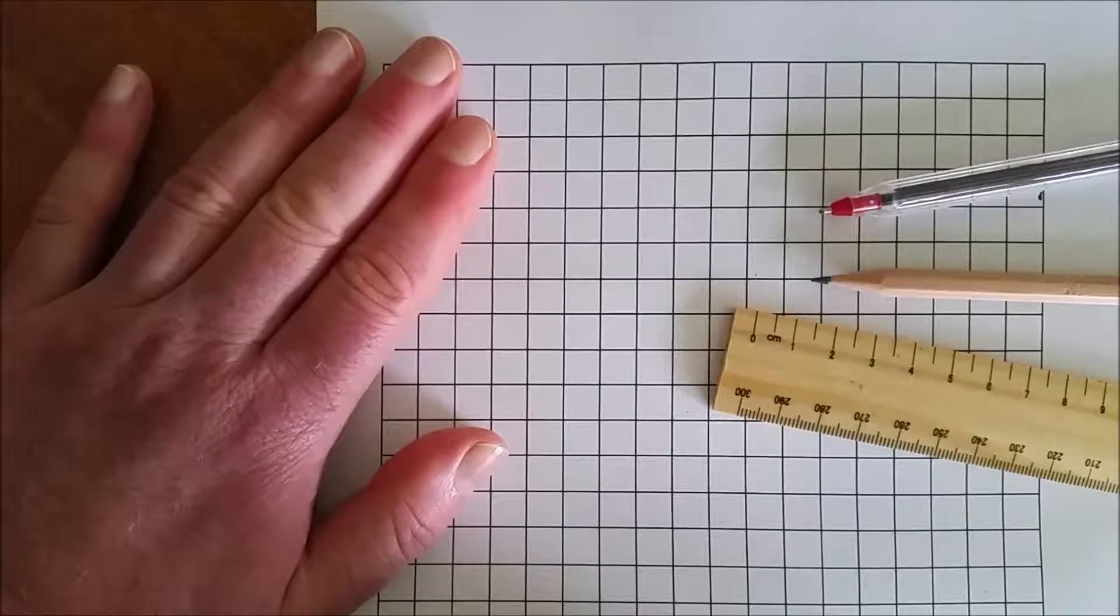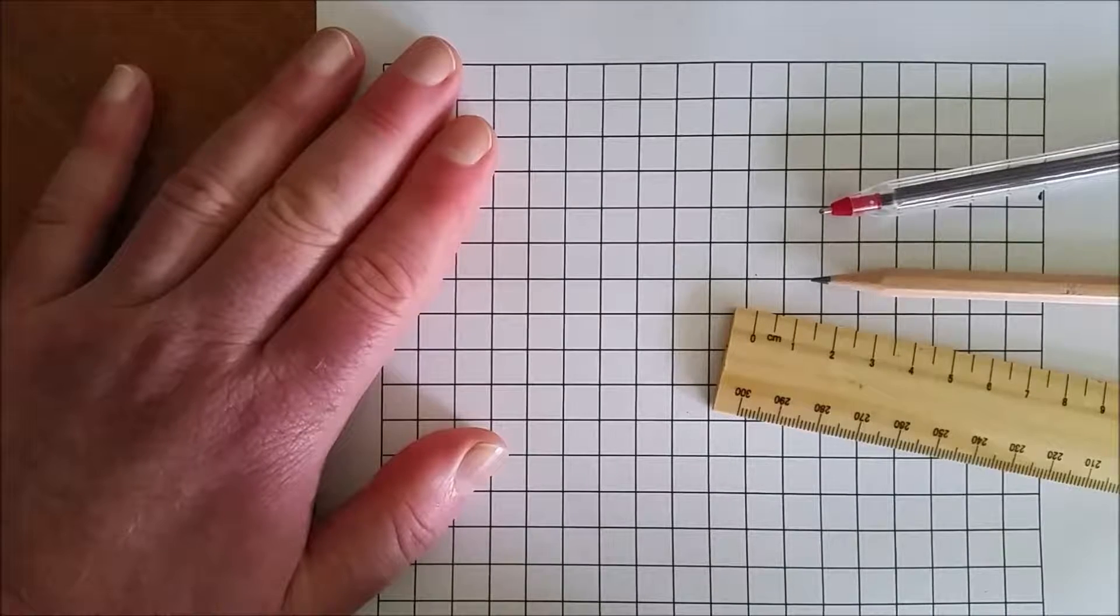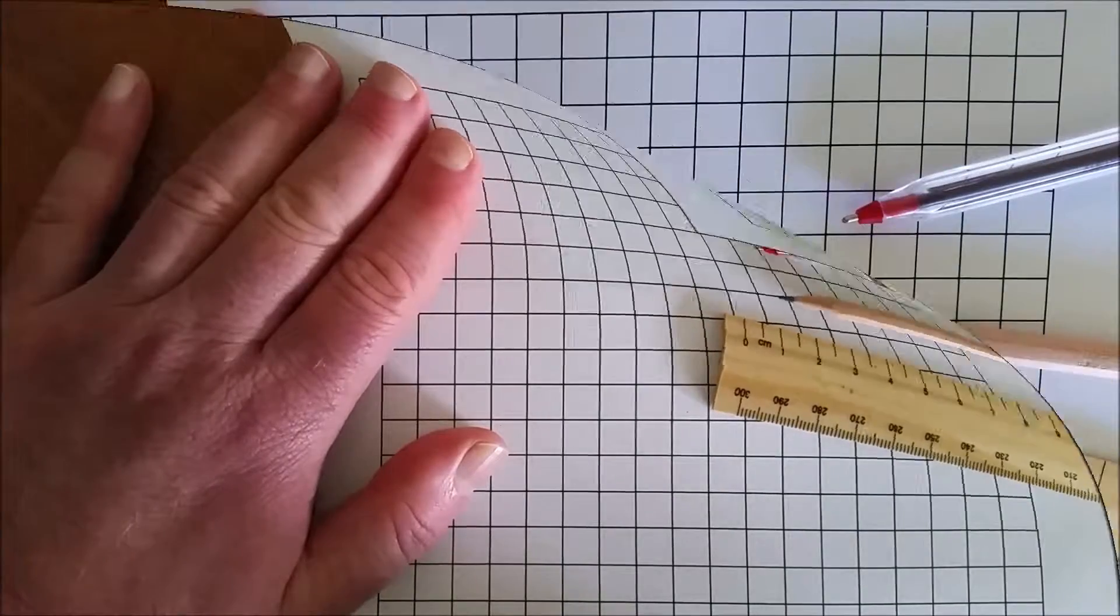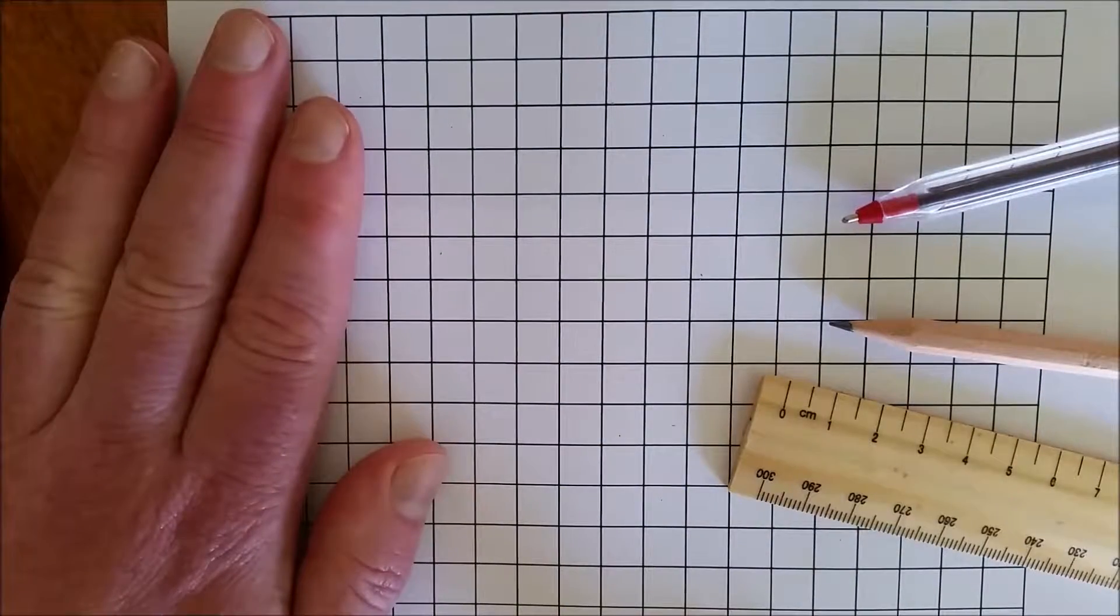It will also allow me to rub out my working if I make a mistake without rubbing out the actual question. The two colours also draw attention to the way the original number has changed due to renaming when doing subtraction.